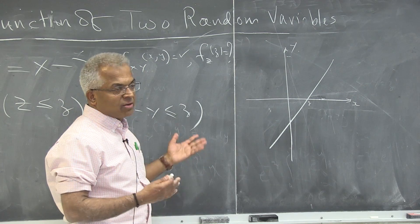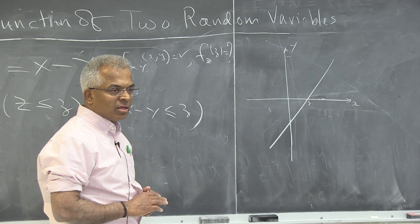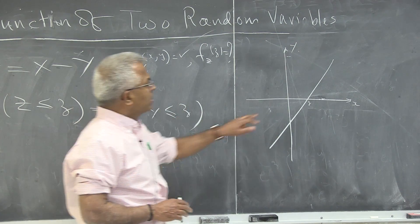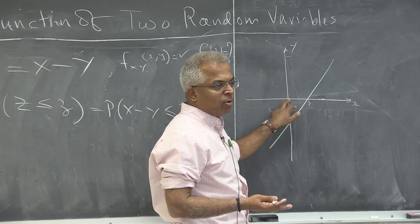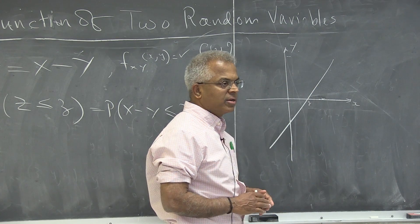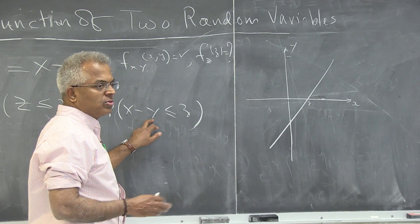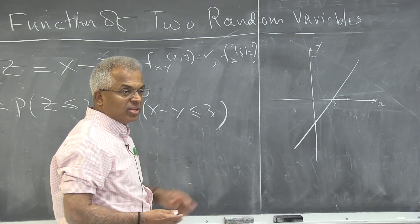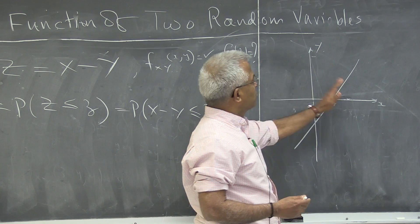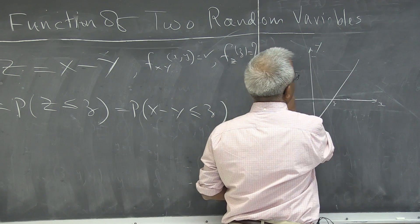Which is the region where x minus y is less than or equal to z? Take a point and see whether that point satisfies the inequality. This point is x equal to 0, y equal to 0. If z is positive, 0 is less than z. So this is the region where x minus y is less than or equal to z.